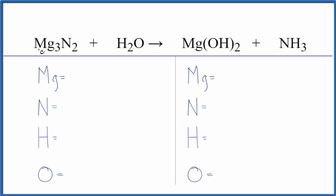In this video, we'll balance the equation for Mg3N2 plus H2O. This is magnesium nitride plus water. In the reaction, let's first count up the atoms and then balance the equation. We have three magnesium atoms, two nitrogens, two hydrogens, and one oxygen.